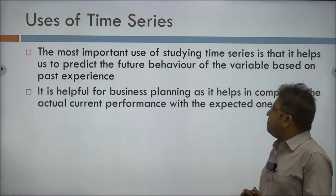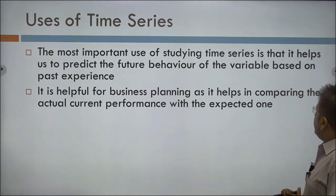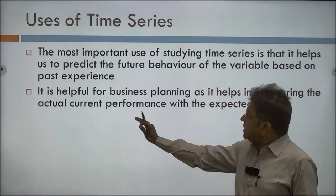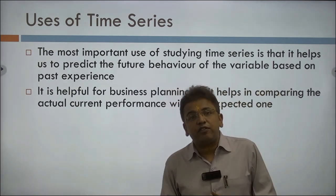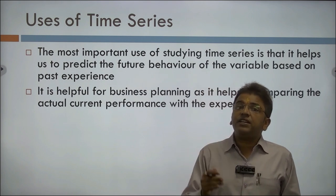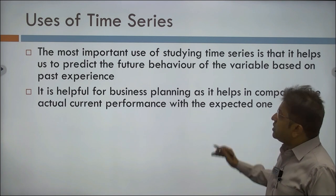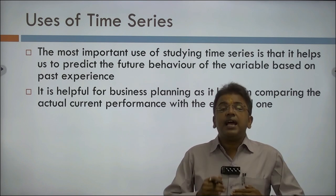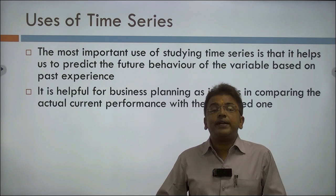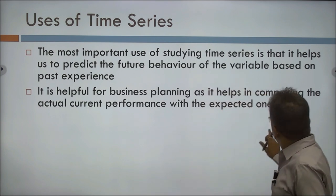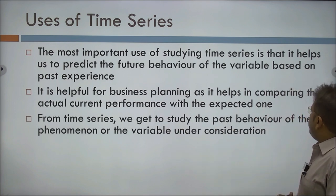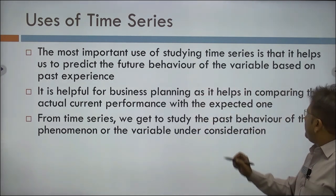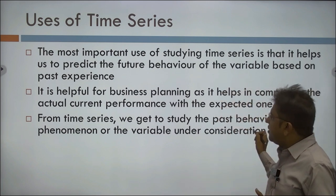Time series is helpful for business planning as it helps in comparing the actual current performance with the expected one — similar to chi-square where we take observed and expected values. A business planner can take the help of the data and calculate the expected data for the future. From time series, we get to study the past behavior of the phenomenon or variable under consideration.